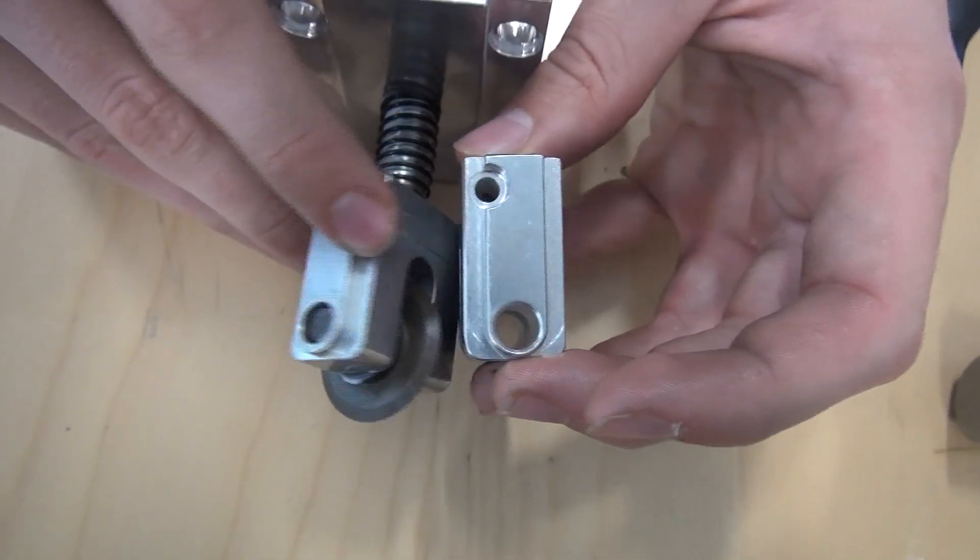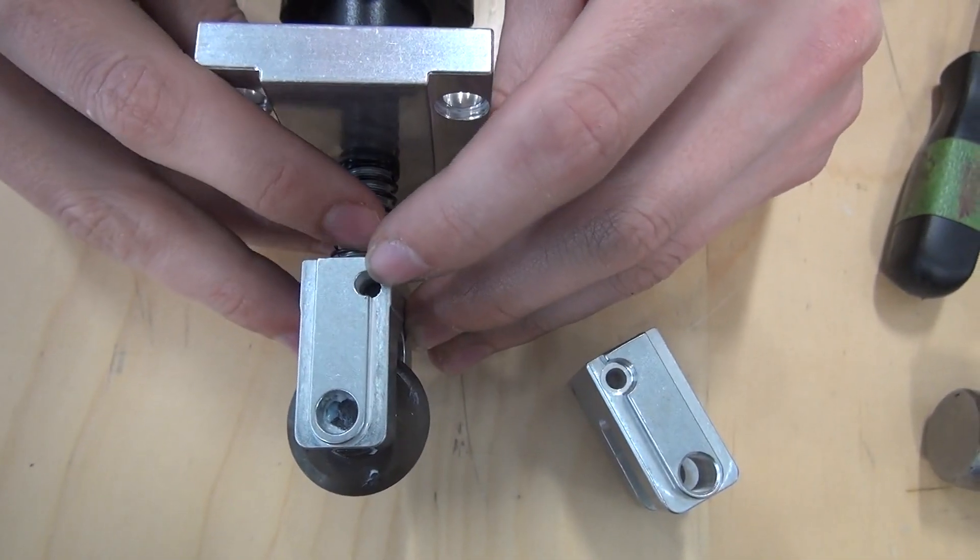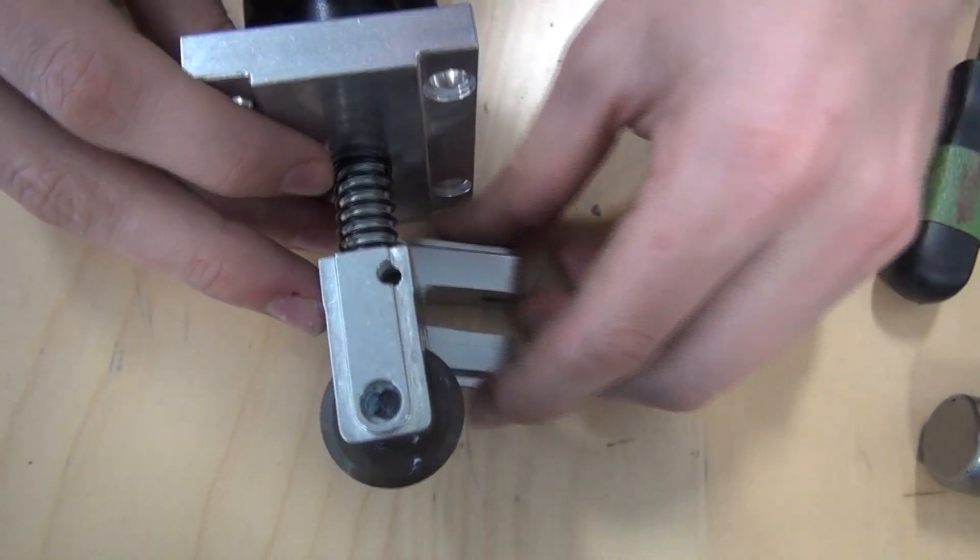So now to remove the pins, you want to go to the side that has the small hole. You want to have something underneath here.